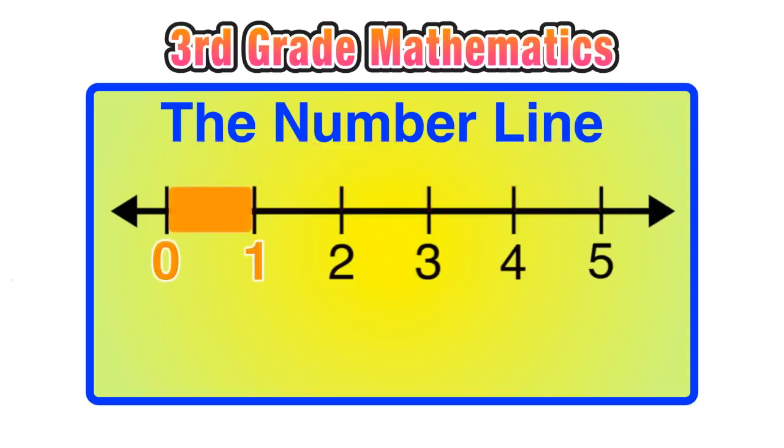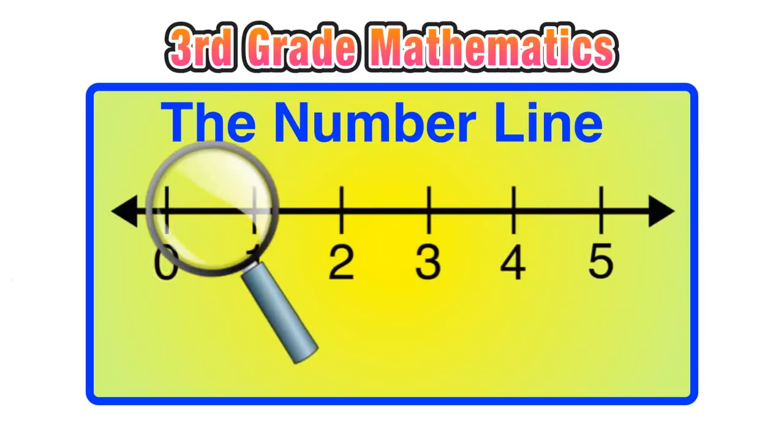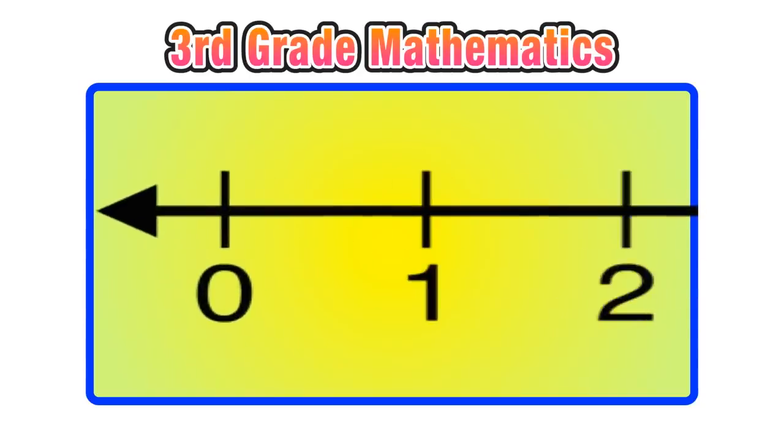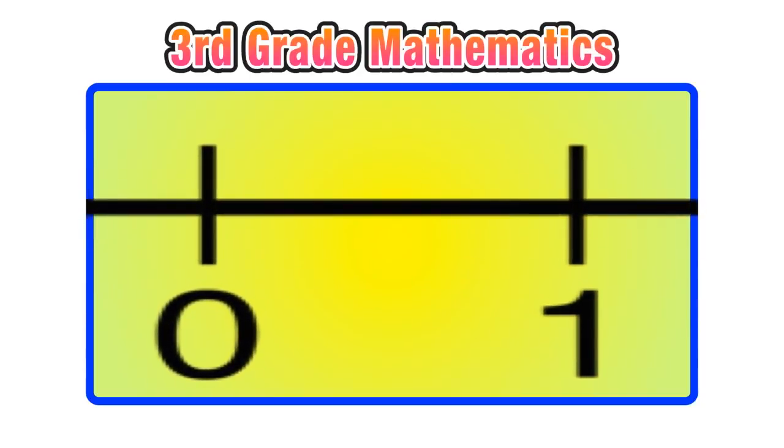But the number line that we are looking at is only the distance in between 0 and 1. So imagine taking a magnifying glass and putting it over that section of the number line and zooming in really close. And that distance between 0 and 1 represents 1 whole, like 1 whole sandwich.